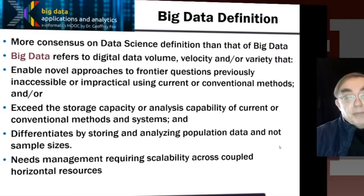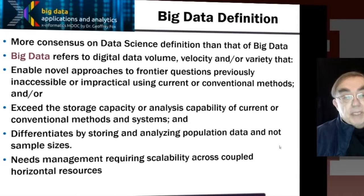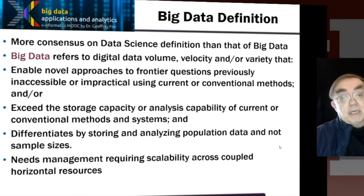Interestingly, there appeared to be more agreement on what data science was than on what big data is. Big data is sometimes defined by the Vs, of which the most common are three: volume, velocity, and variety. The bigness refers to these dimensions — so you can actually have a small volume, but if you have high velocity and it gets updated very quickly, or very rich variety, it can still be effectively big data, because the processing problem is big if you have a very complex data source.